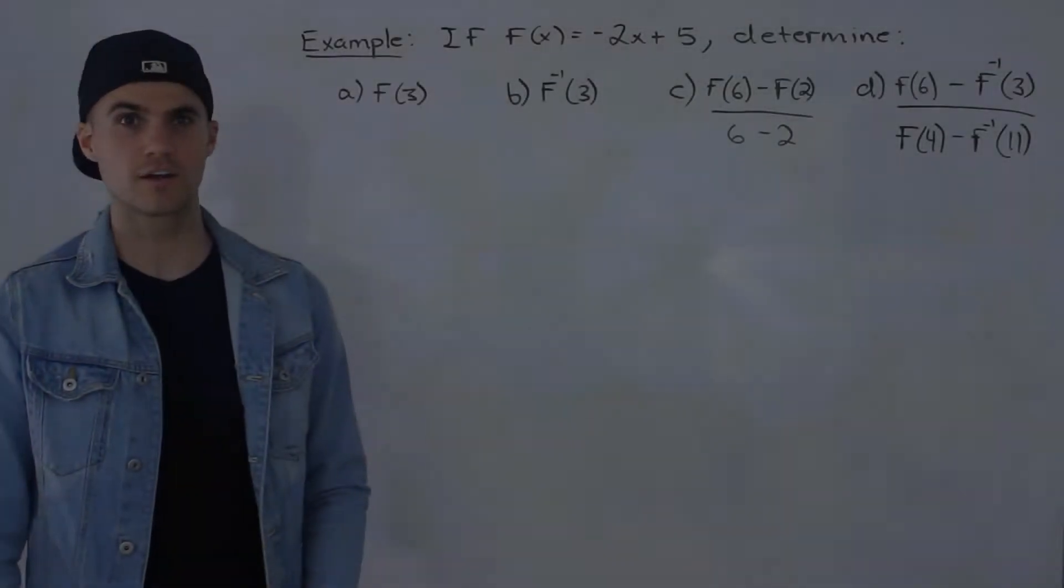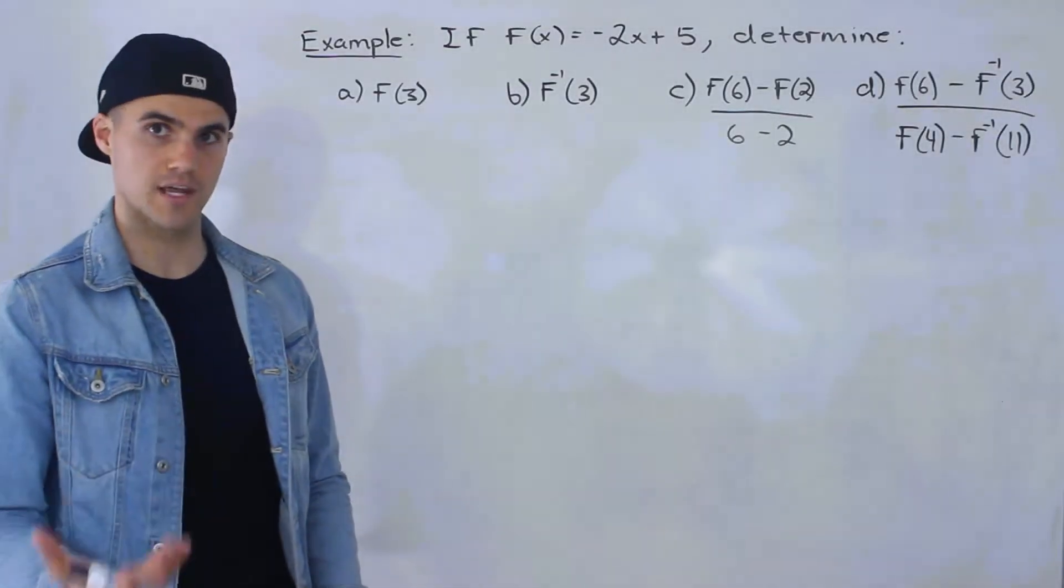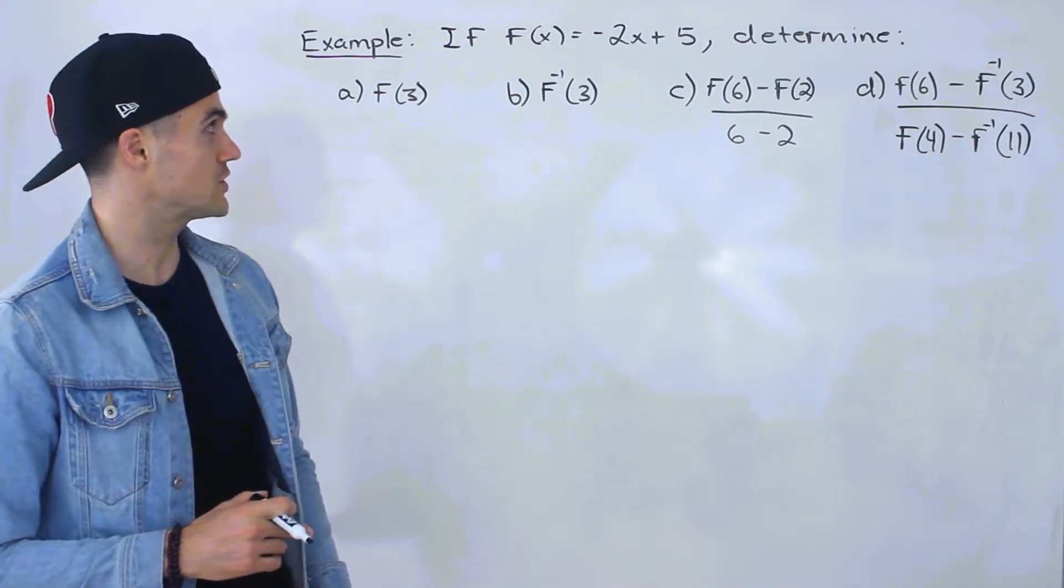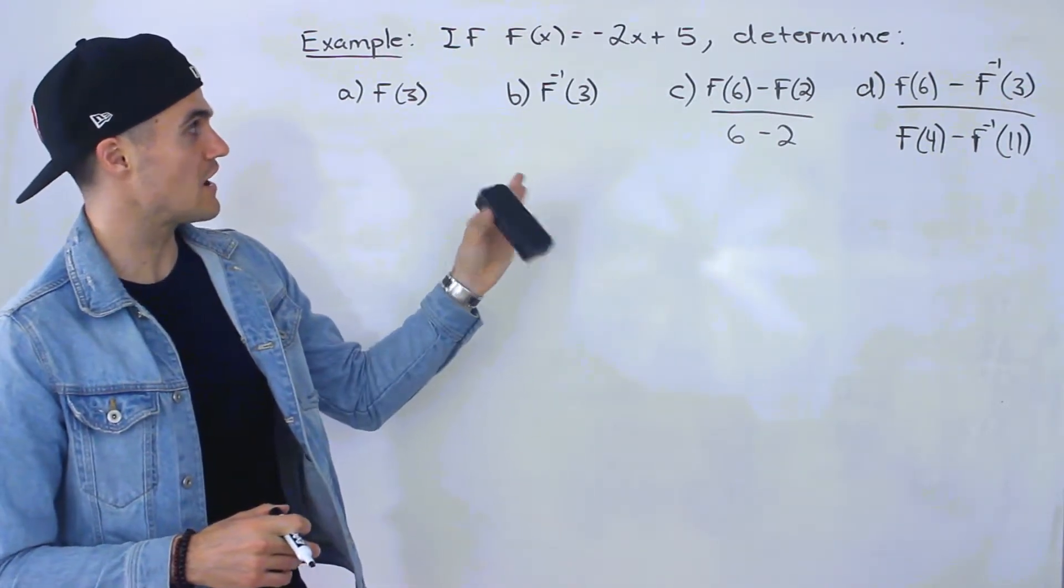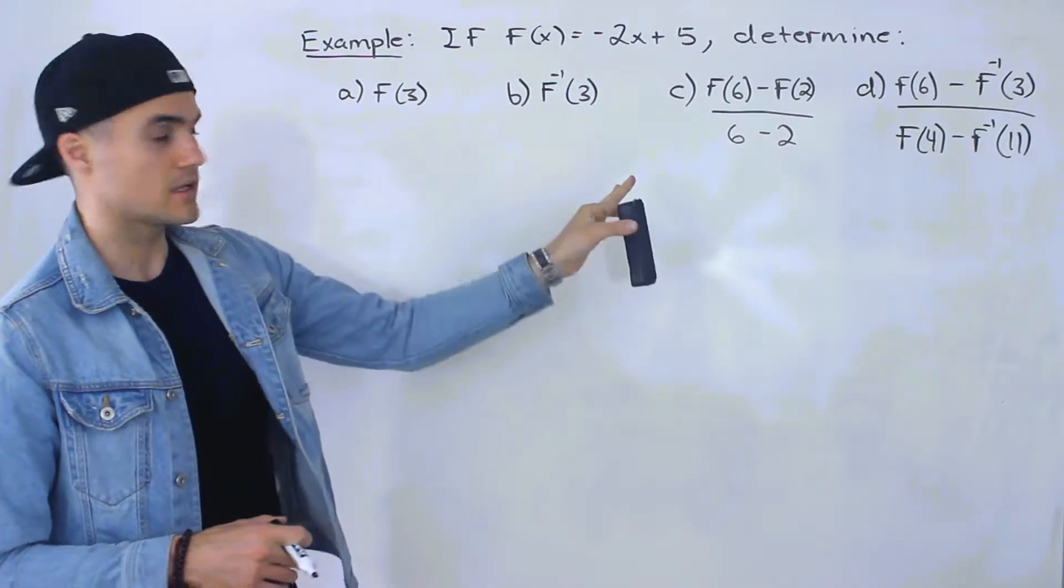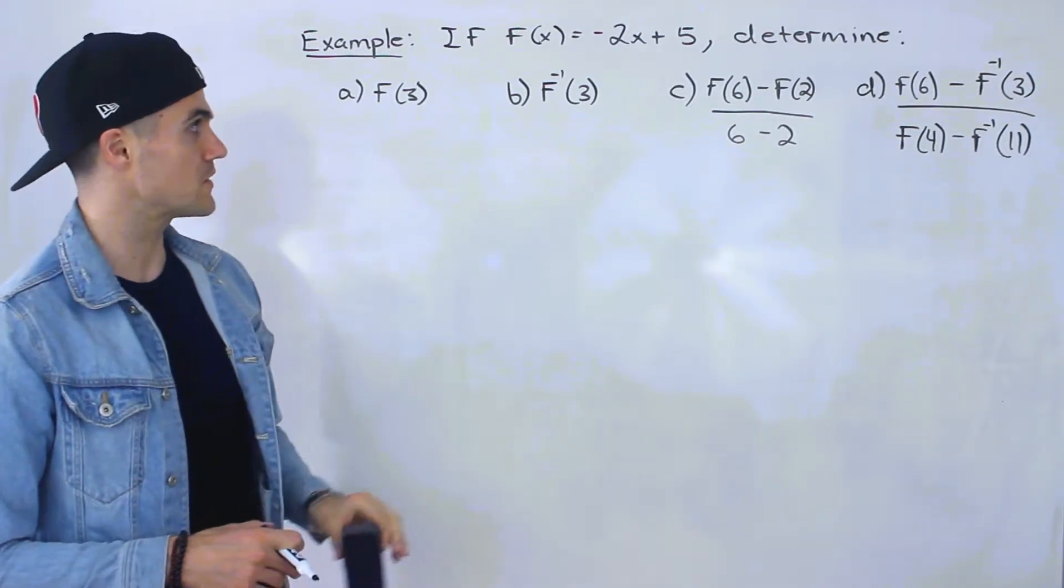What's going on everyone? Welcome back. Patrick here, moving on to another example dealing with the inverse of a function. So we're told if f(x) equals -2x + 5, we have to determine each of these expressions here. Notice we have four expressions.